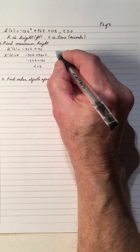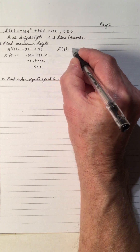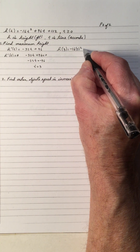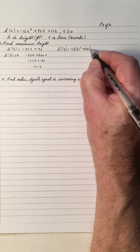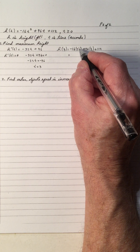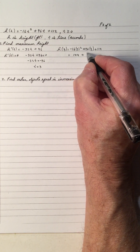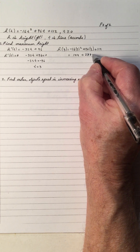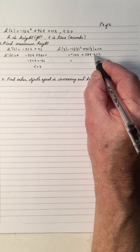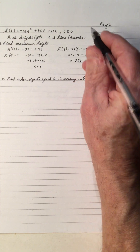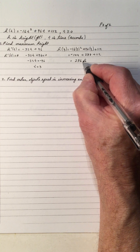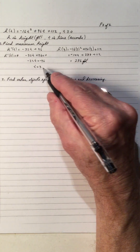The maximum height occurs at t = 3, so we compute h(3) = -16(3²) + 96(3) + 112. Negative 16 times 9 is -144. 96 times 3 is 288, plus 112. Add that up and you get 256. So the maximum height is 256 feet, occurring at three seconds.